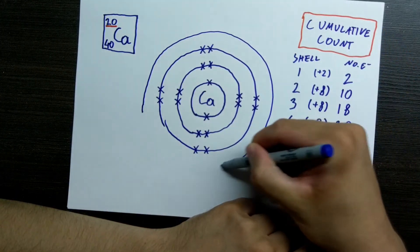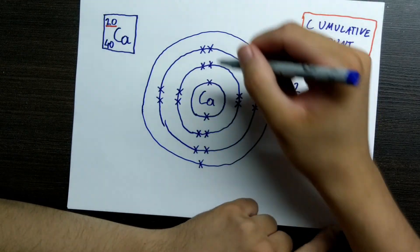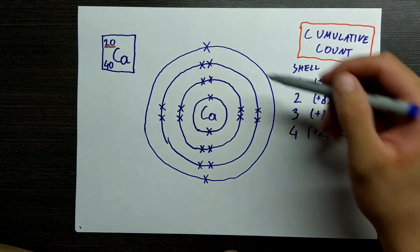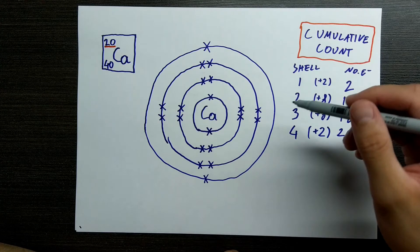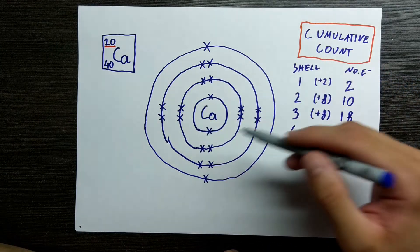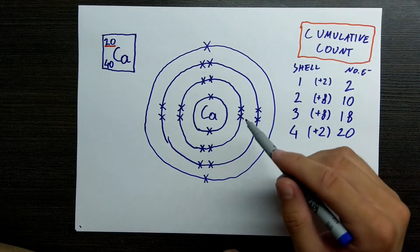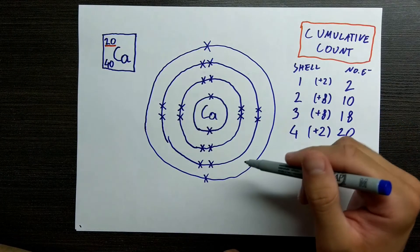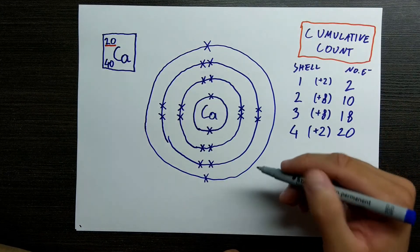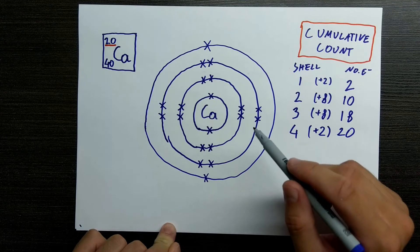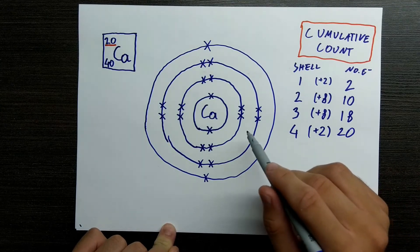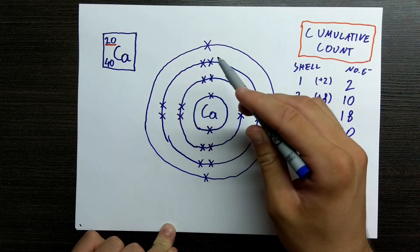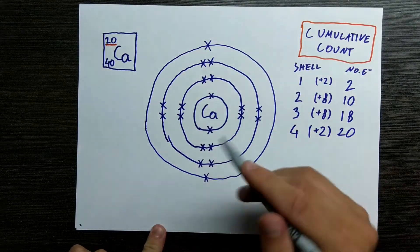The final shell will have just two. Now we have drawn the electron shell layout for atom of calcium. This is it. This is how you do it. What is the importance of all this? Why are we even bothering doing that?